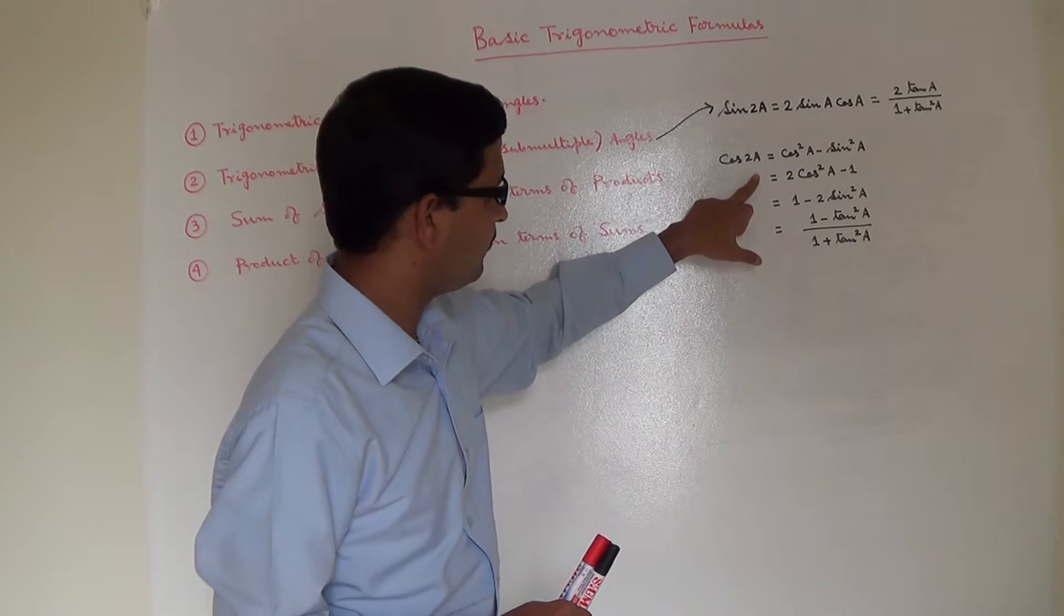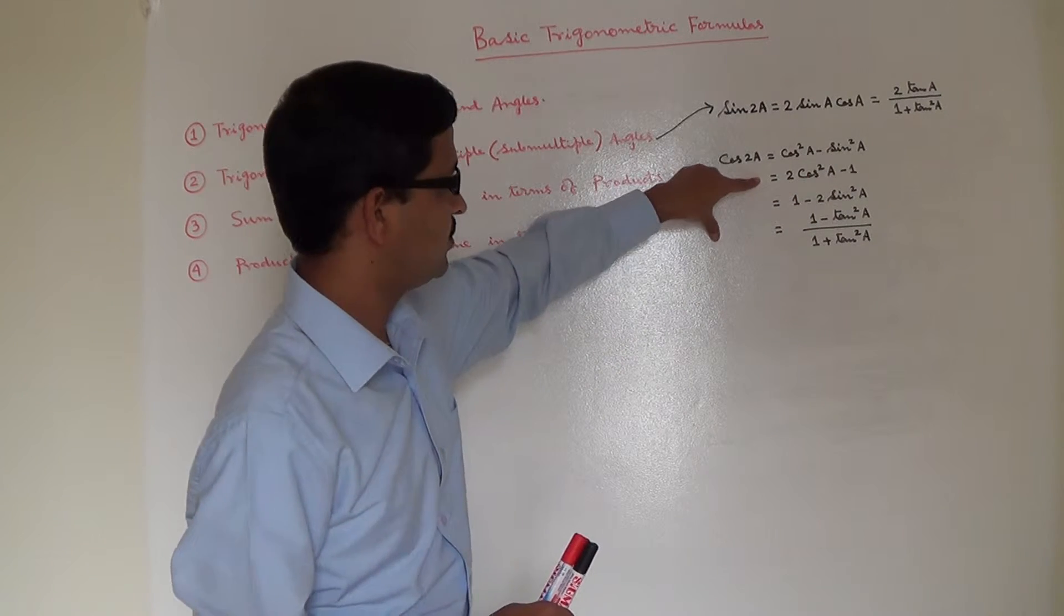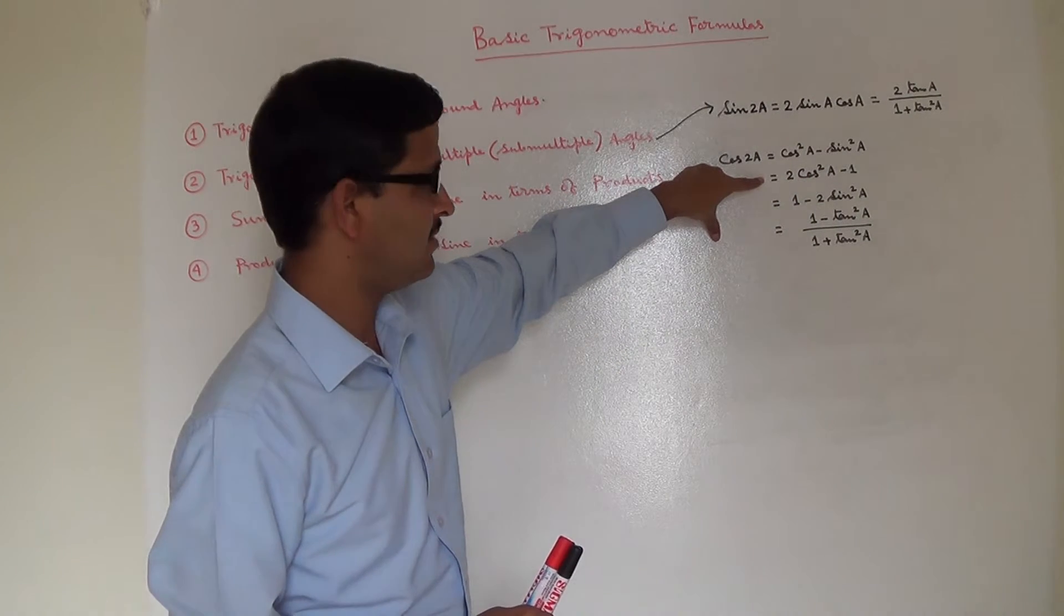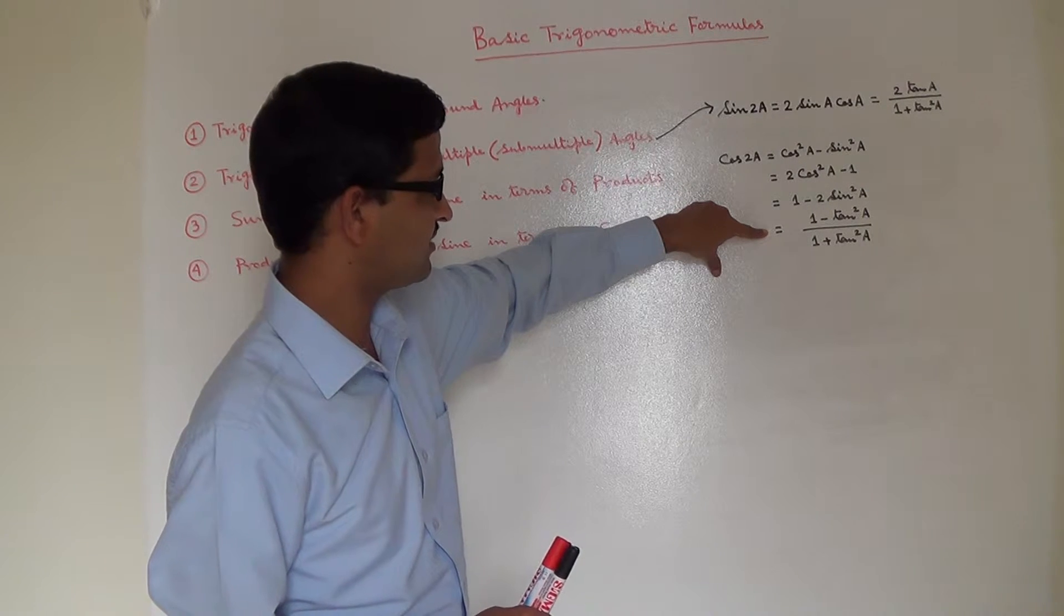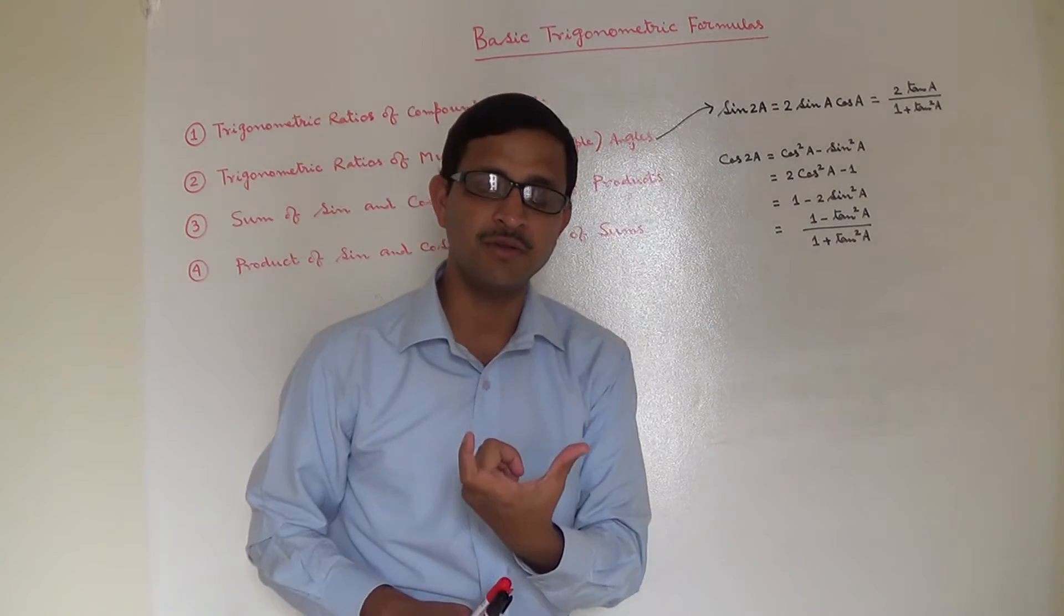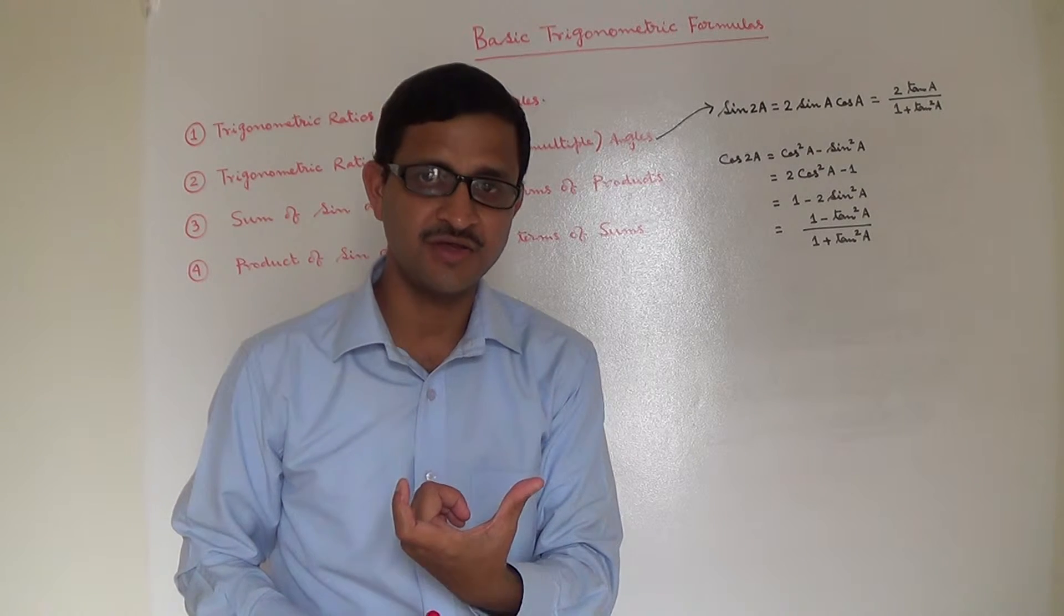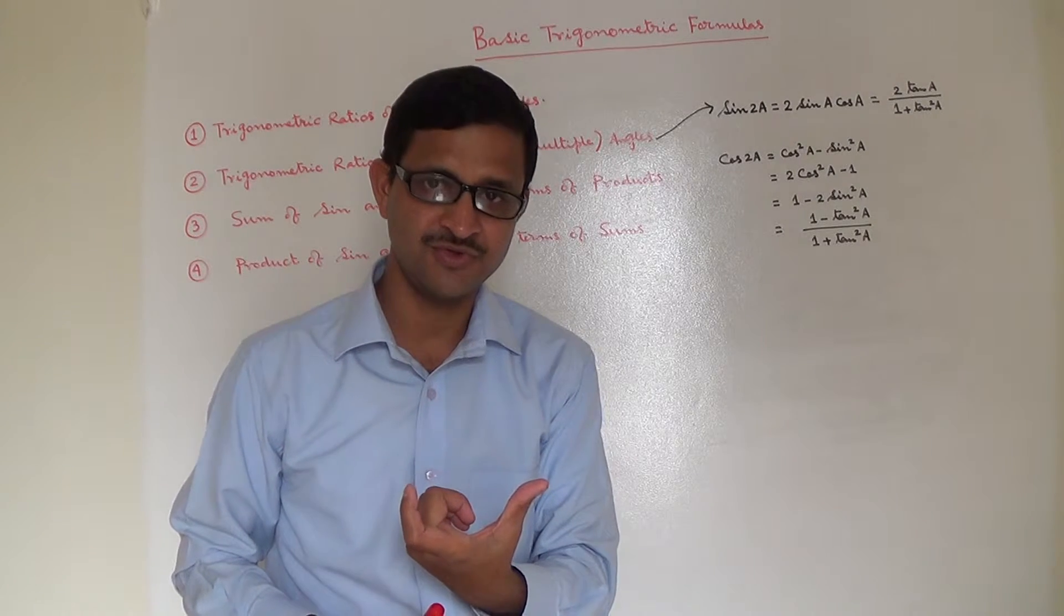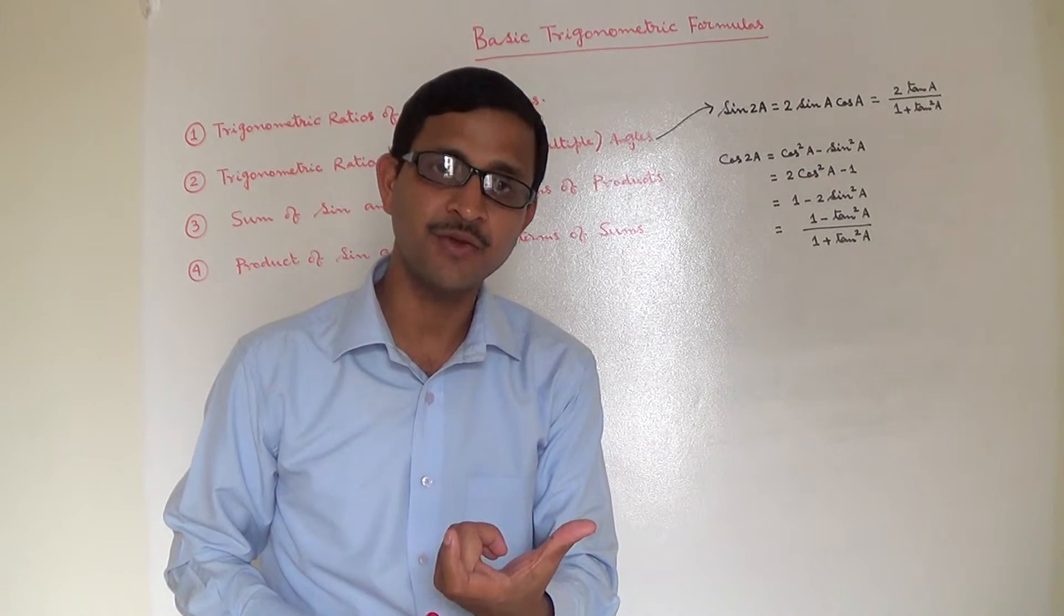Similarly, cos 2A has four different flavors: cos square A minus sin square A, 2 cos square A minus 1, 1 minus 2 sin square A, and 1 minus tan square A by 1 plus tan square A. So depending on the problem, by looking into it, you have to decide which one to use so that you can reach the solution effectively and quickly.